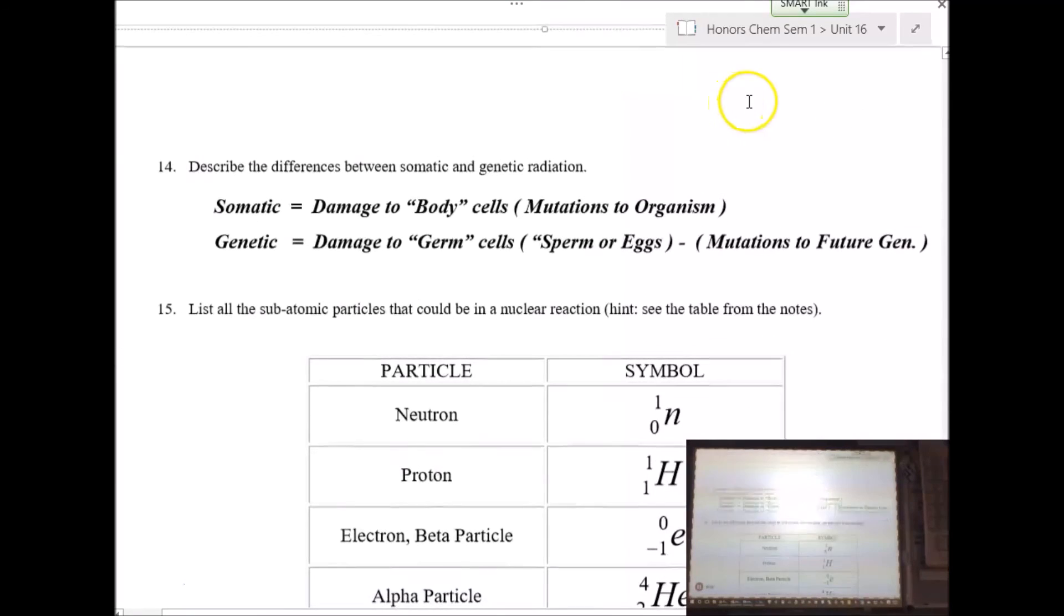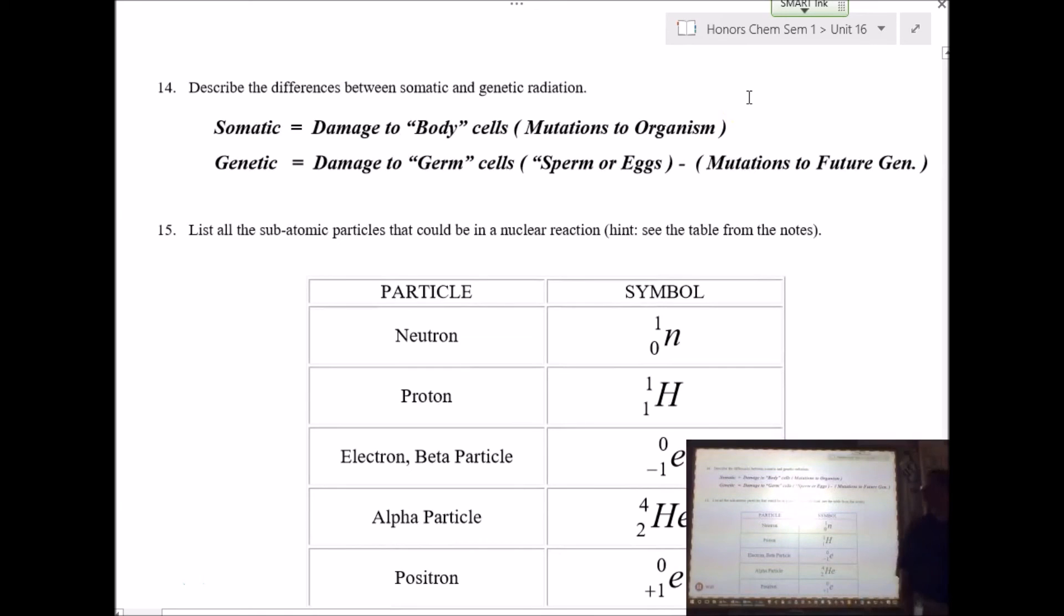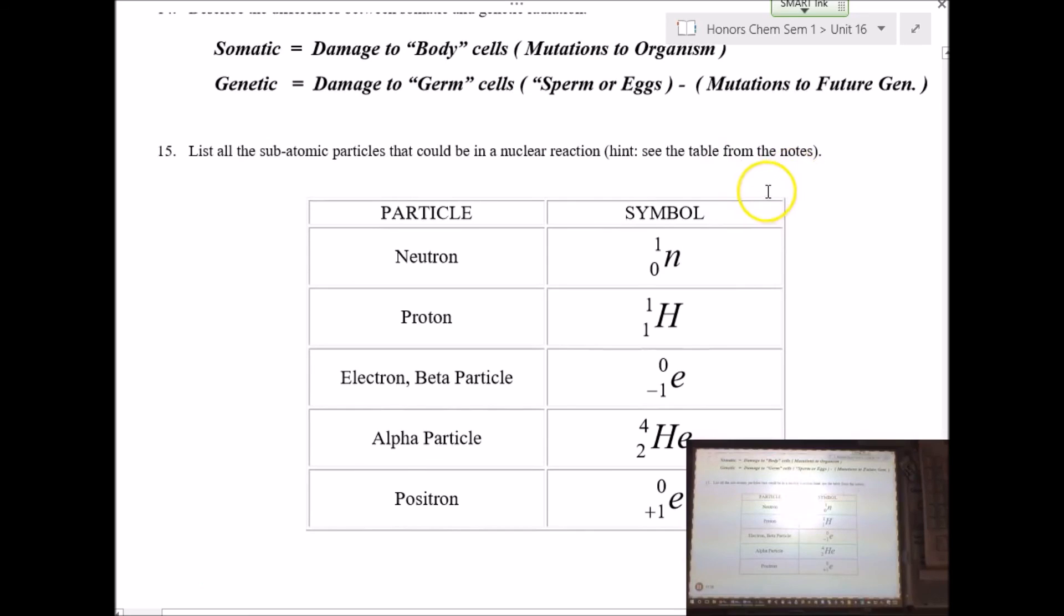And then, number 14 kind of piggybacks off of an earlier question. Describe the differences between somatic and genetic radiation. If you ever go to the dentist, hopefully you've been to the dentist and had some x-rays taken, they generally will put a lead apron over what part of your body? Your chest and make sure that they're covering your genitals. Because we don't want to get x-ray exposure to those parts. So, in other words, if you get somatic damage, that's like on parts that are not related to the next generation. So, you get arm cancer, leg cancer, brain cancer, that's not going to affect your sperm or eggs. So, make sure that you are limiting the amount of exposure to the parts that you care about. That's rule number one in my book. Take care of that. We don't want to make any mutant ninja turtles.